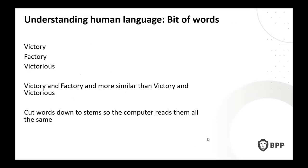We can also talk about bits of words — these are called stems. Take the example of 'victory,' 'factory,' and 'victorious.' Victory and factory look more similar on paper, but we know that victory and victorious are more meaningfully related. So we use a word stem — the core meaningful part. In this case, 'vict' is the stem of victory and victorious, while 'fact' is the stem of factory. We have the type of word and the part of the word — these aren't things you consciously think about, but they're part of the complexity of language.